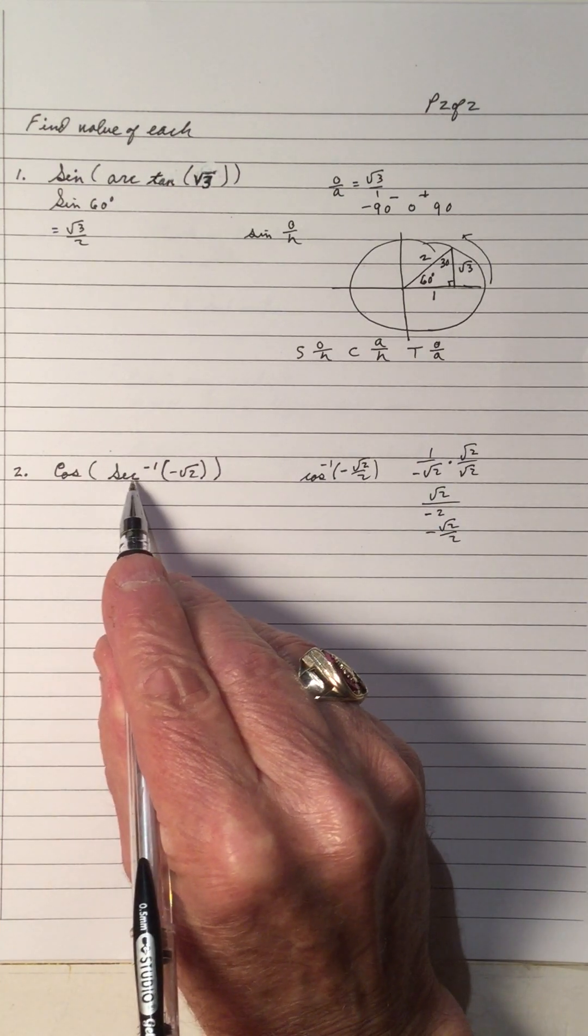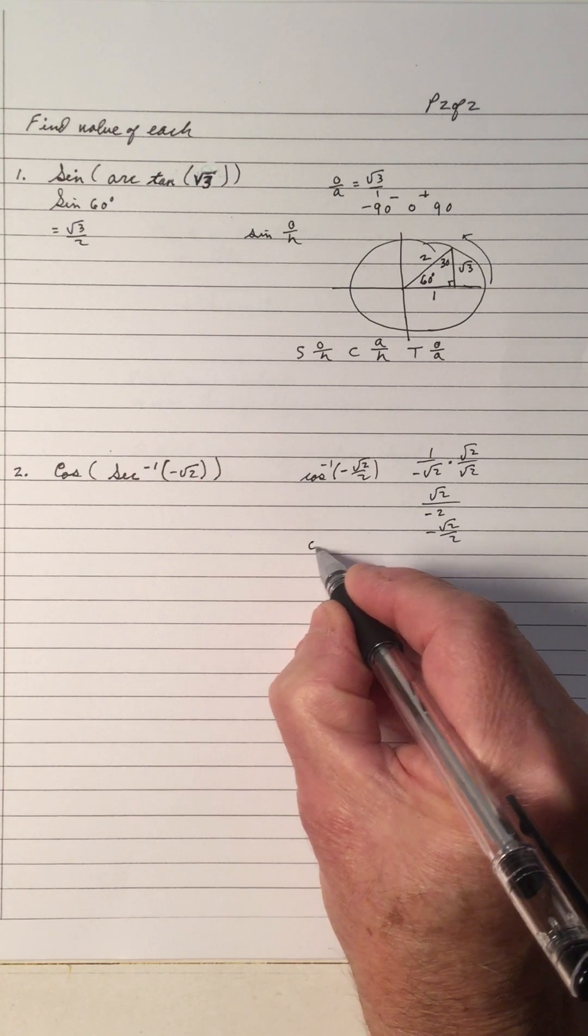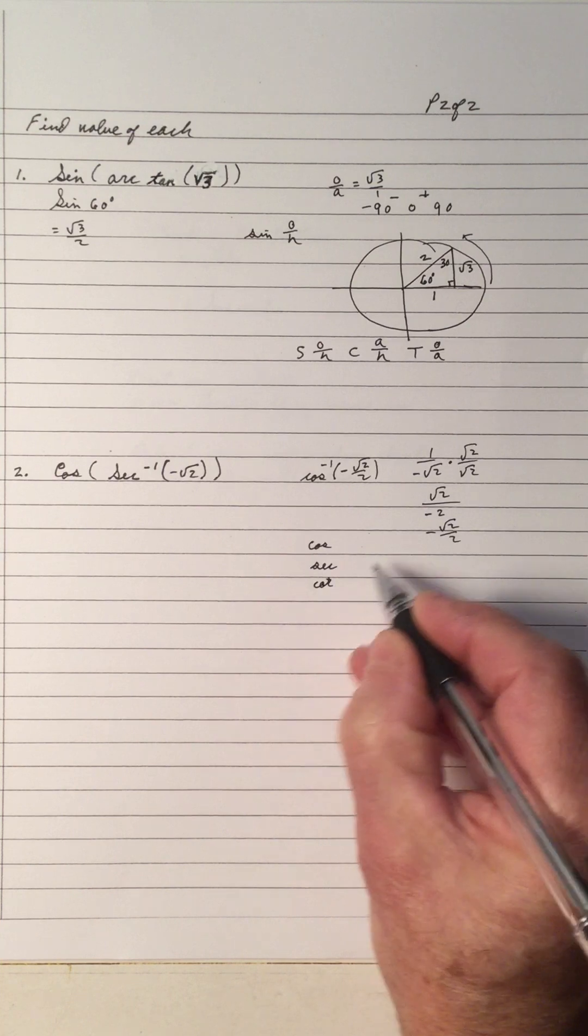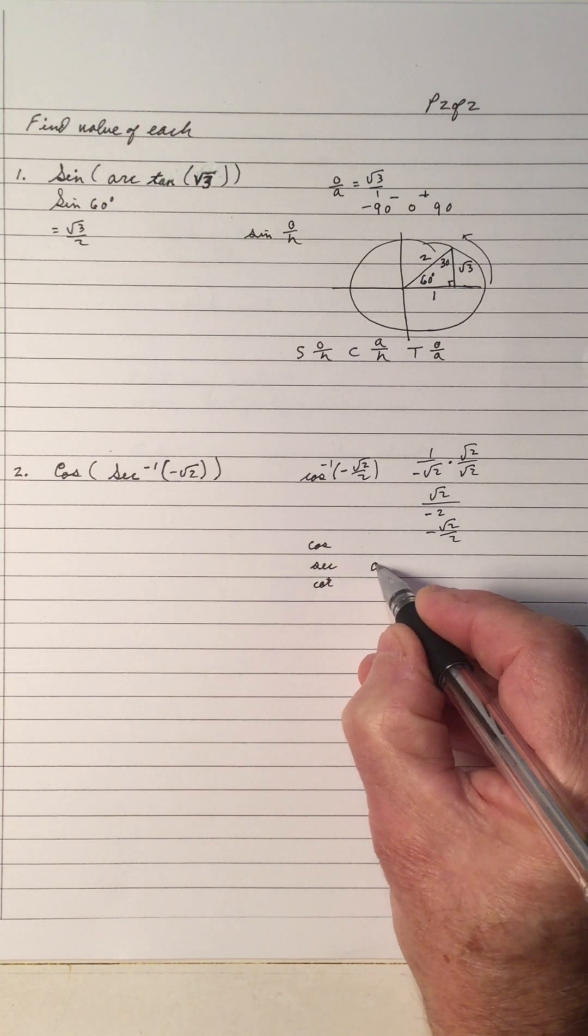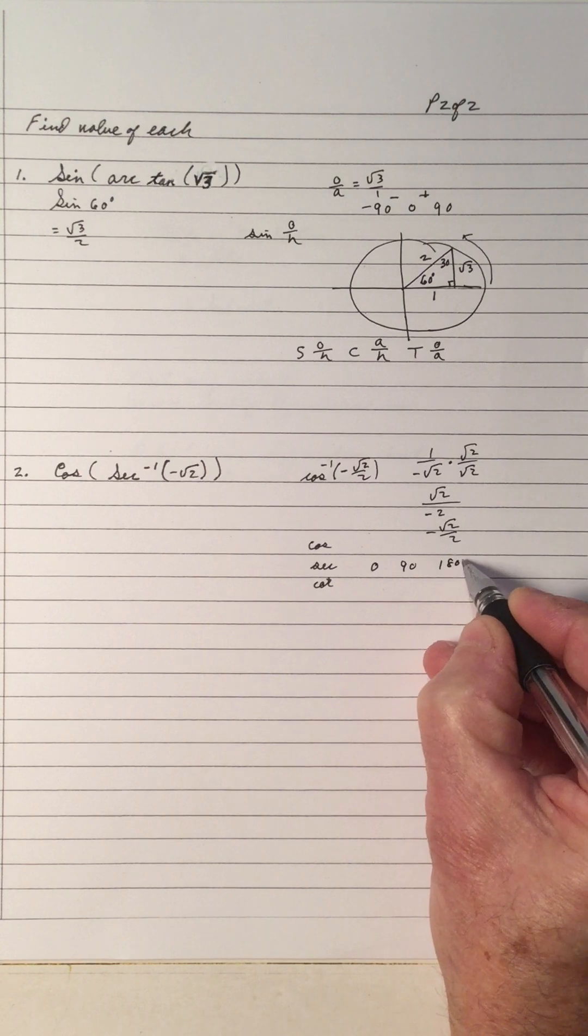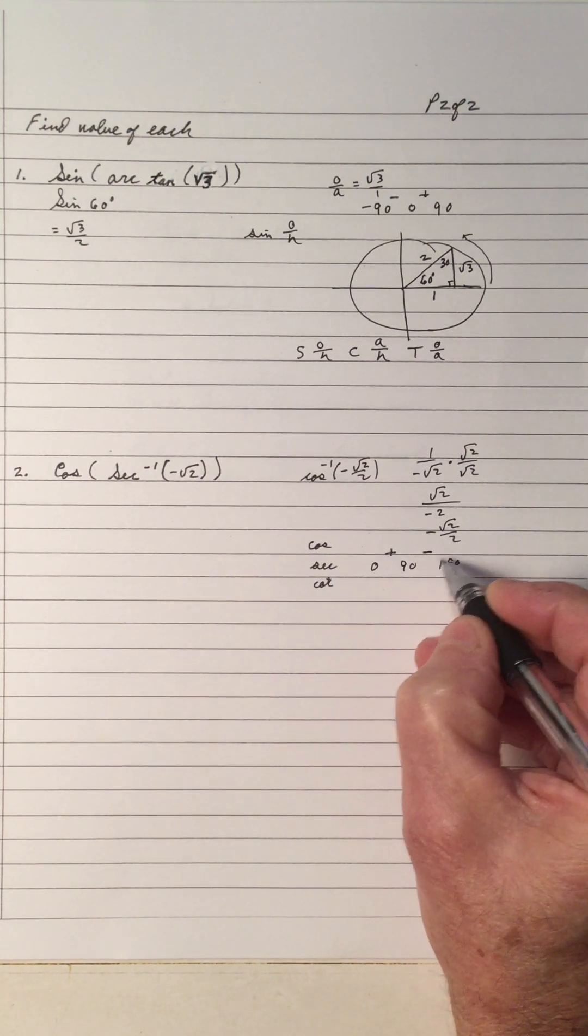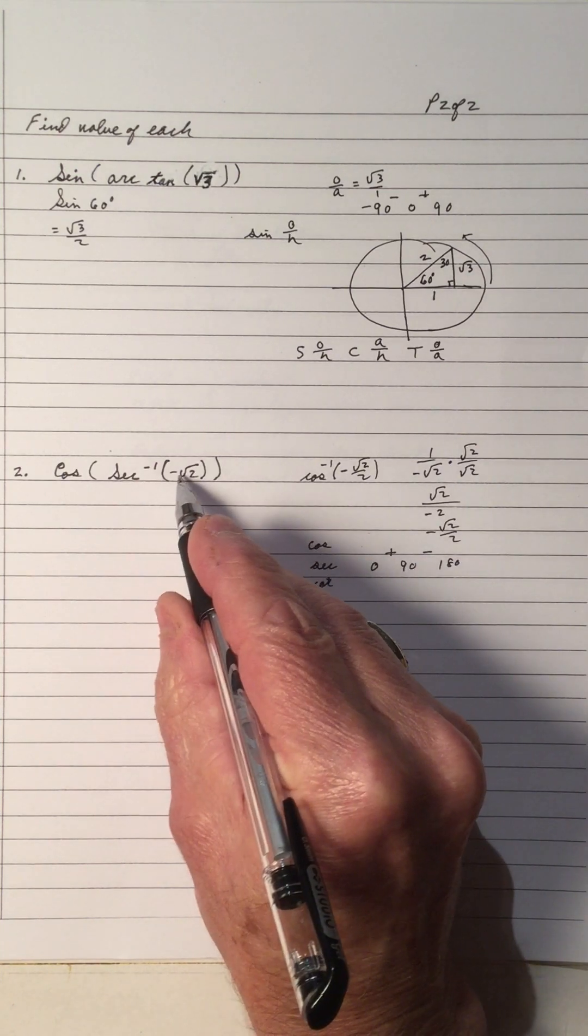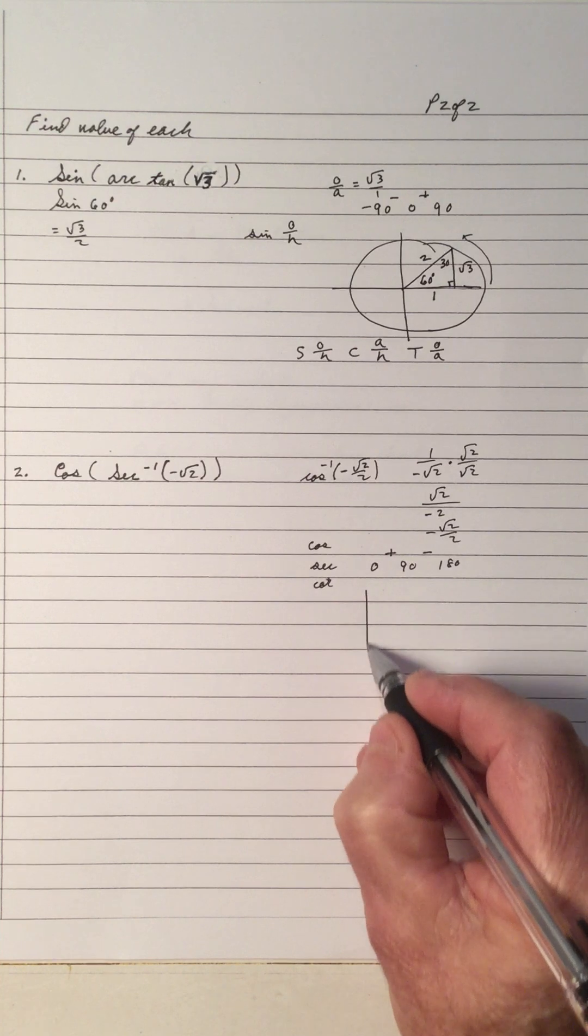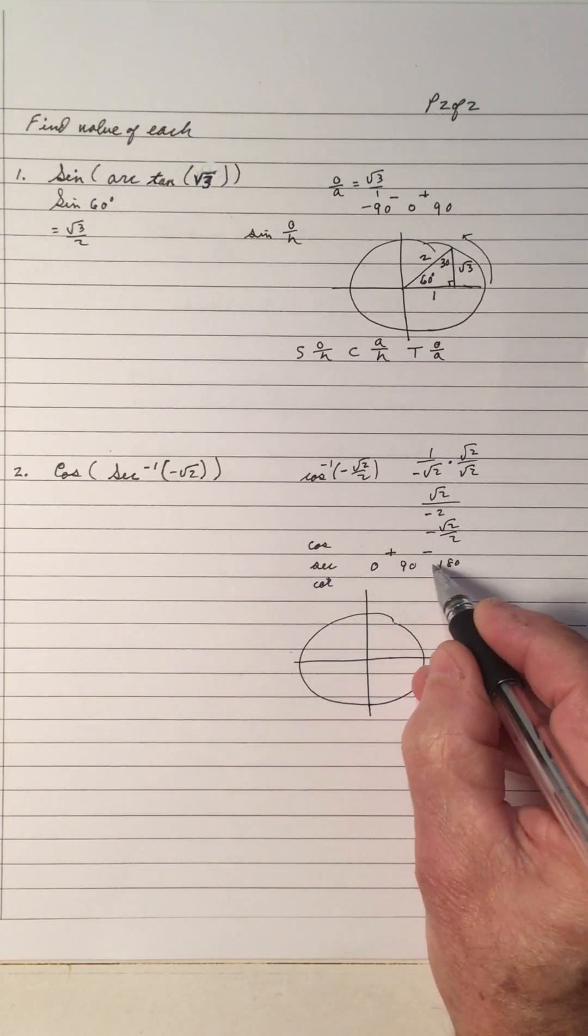So, root 2 over 2. Let's see where secant is. Secant is related, we have a cos. Secant and cot, cos, secant and cot are all between 0 and 90 and 180. Positive between 0 and 90, negative between 90 and 180. Because this is negative, this answer is going to be between 90 and 180. So, that means it's drawn in quadrant 2.